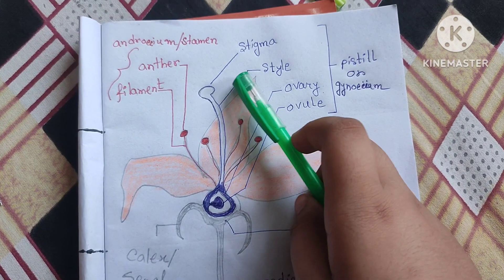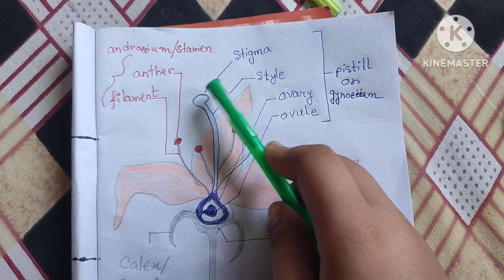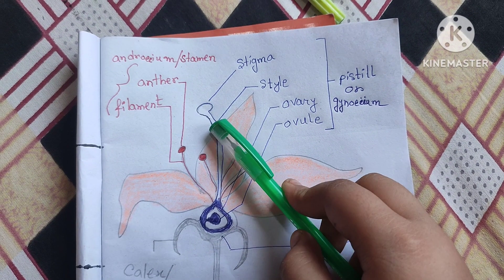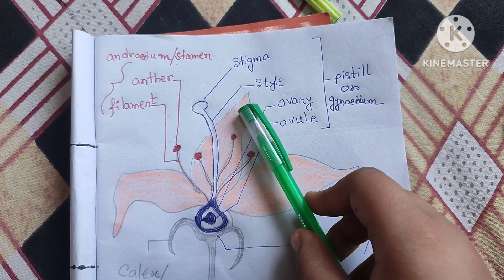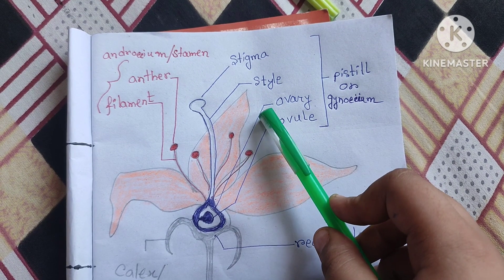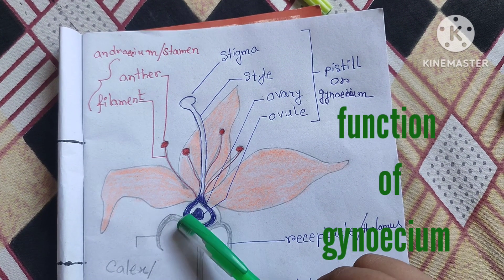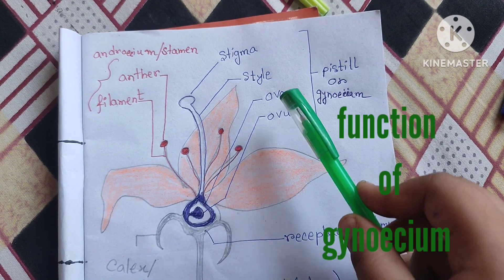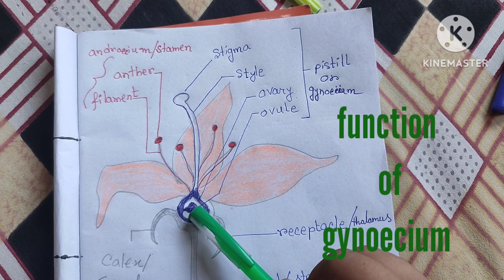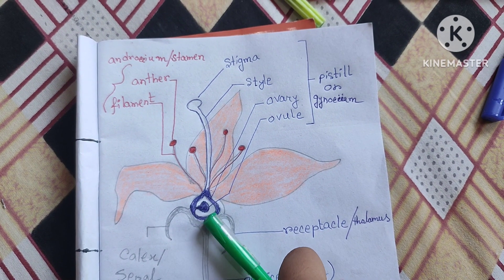Stigma is the opening part of the flower from where the anther or pollen grains enter. Style is the long polar tube. Ovary is the circular part and Ovules are the small eggs which are also known as female gametes.